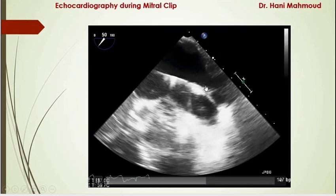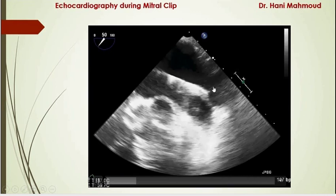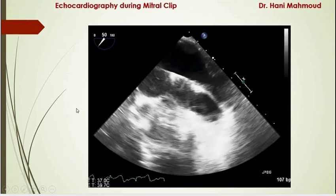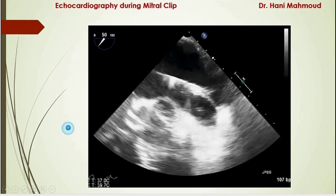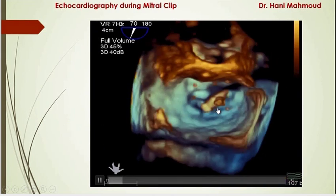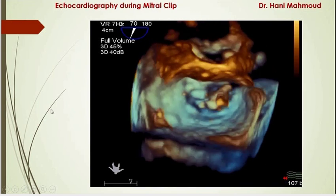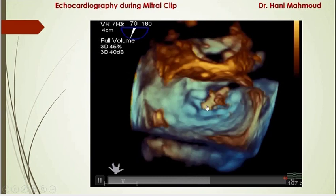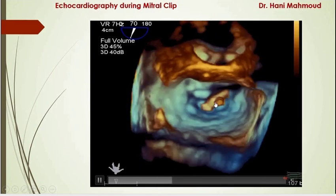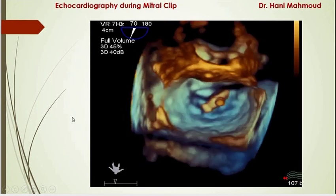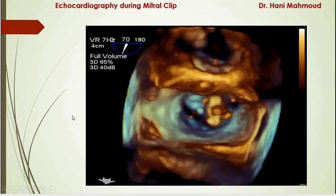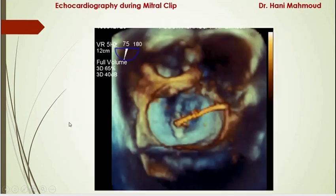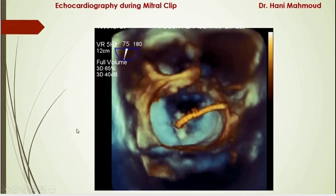The clip came out and was lying over the Coumadin ridge, near the left upper pulmonary vein and left atrial appendage. We showed this to the interventionist, who then moved away from the Coumadin ridge by pulling back the sheath slightly and moving medially or laterally until the clip was above the mitral valve. Then, back to 3D to check perpendicularity — a very important step and one of the incremental values of 3D during mitral clip procedures. The clip was oblique relative to the mitral leaflets, so we told the interventionist to rotate anticlockwise. He rotated but was slightly anterior, then adjusted posteriorly to a suitable position.